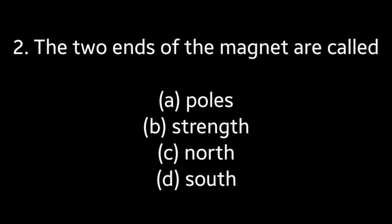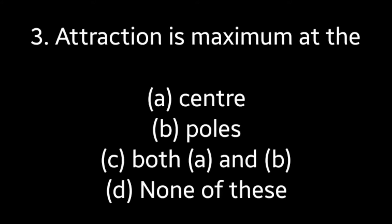Question number two: the two ends of the magnet are called — poles, strength, north-south? Answer is option A: poles. Question number three: attraction is maximum at the — center, poles, both A and B, or none of these? Answer is option B: poles.